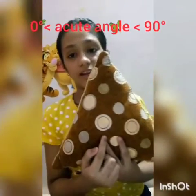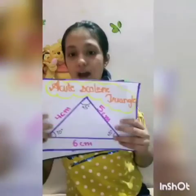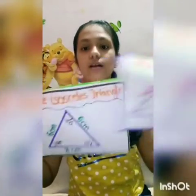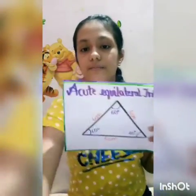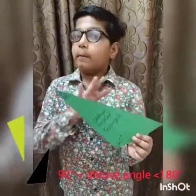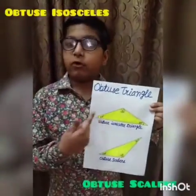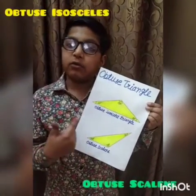An acute angle triangle has each angle greater than 0 degrees but less than 90 degrees. We also have acute scalene triangle, acute isosceles triangle, and acute equilateral triangle. In an obtuse angle triangle, any one angle is greater than 90 degrees but less than 180 degrees. We also have obtuse scalene triangle and obtuse isosceles triangle.